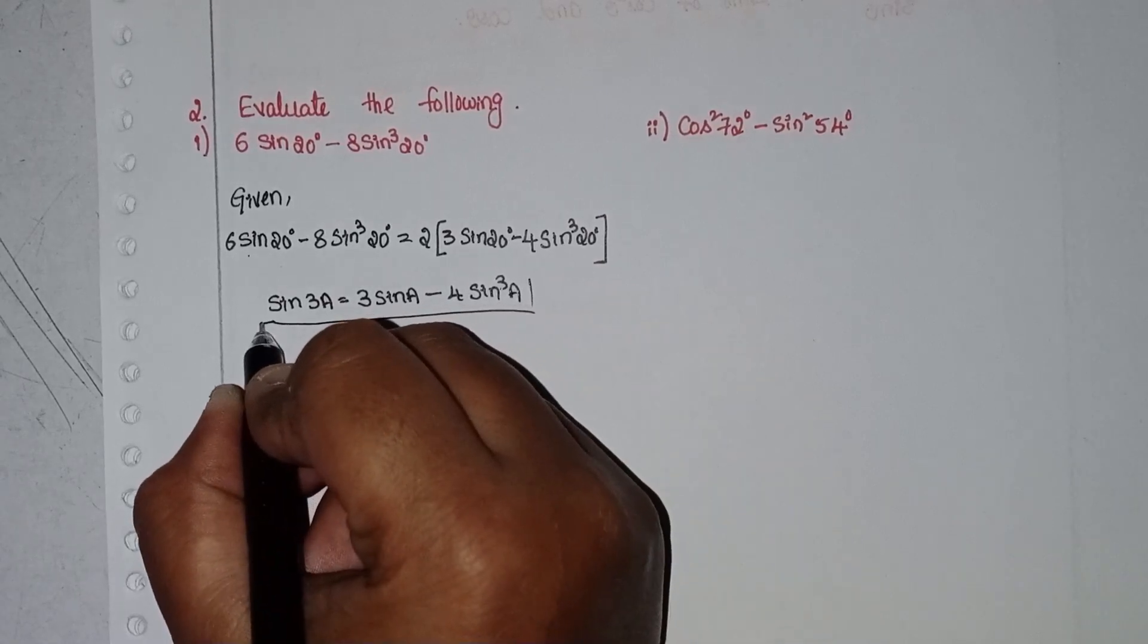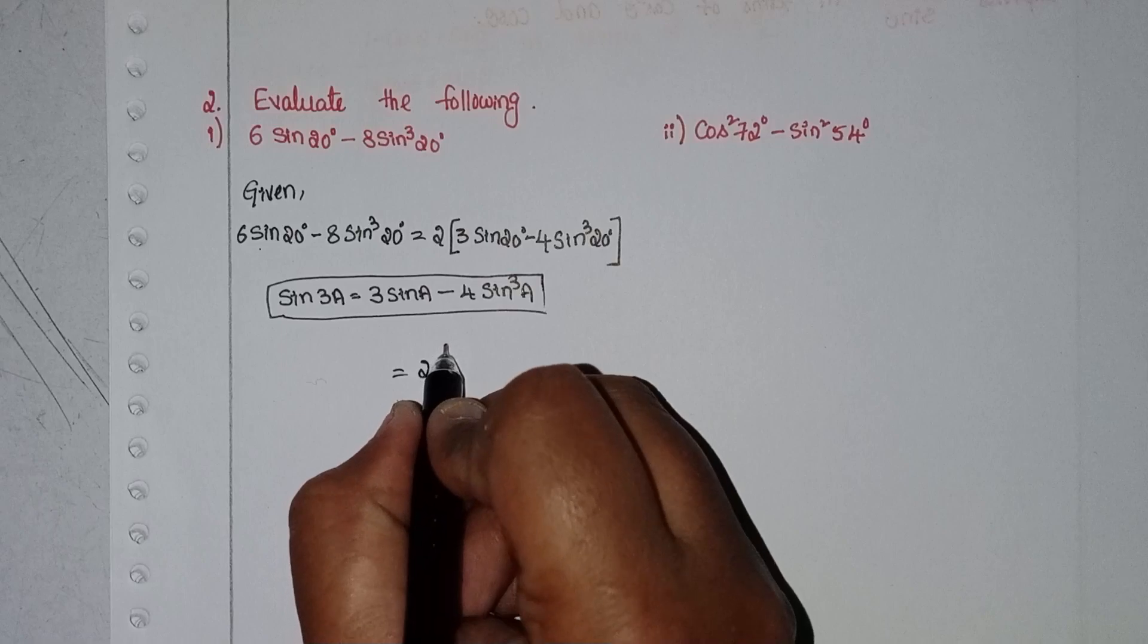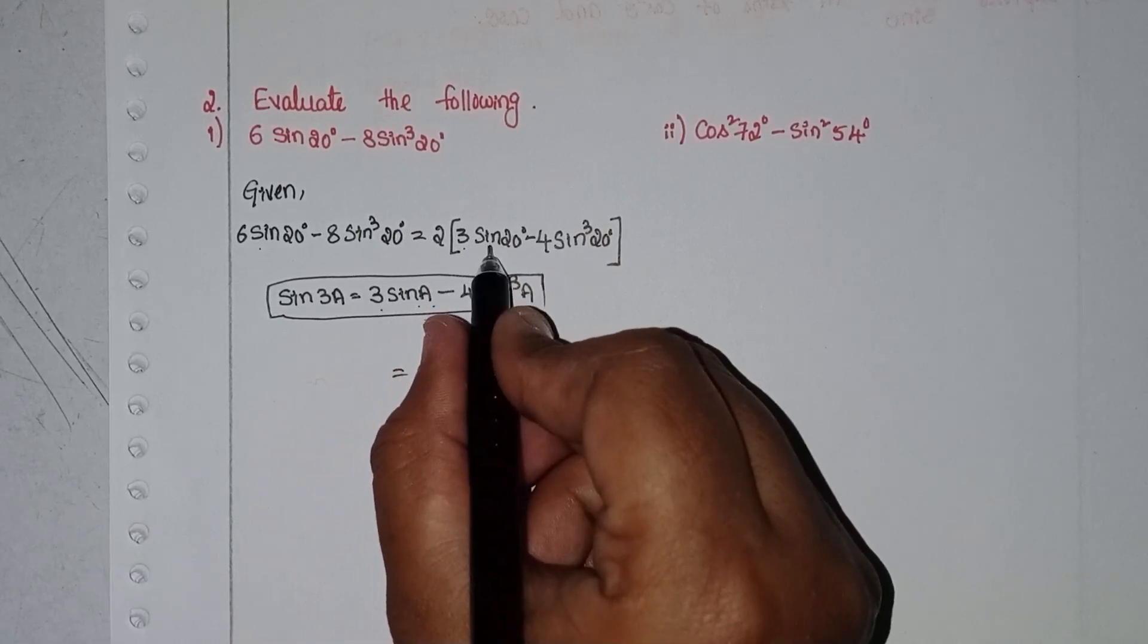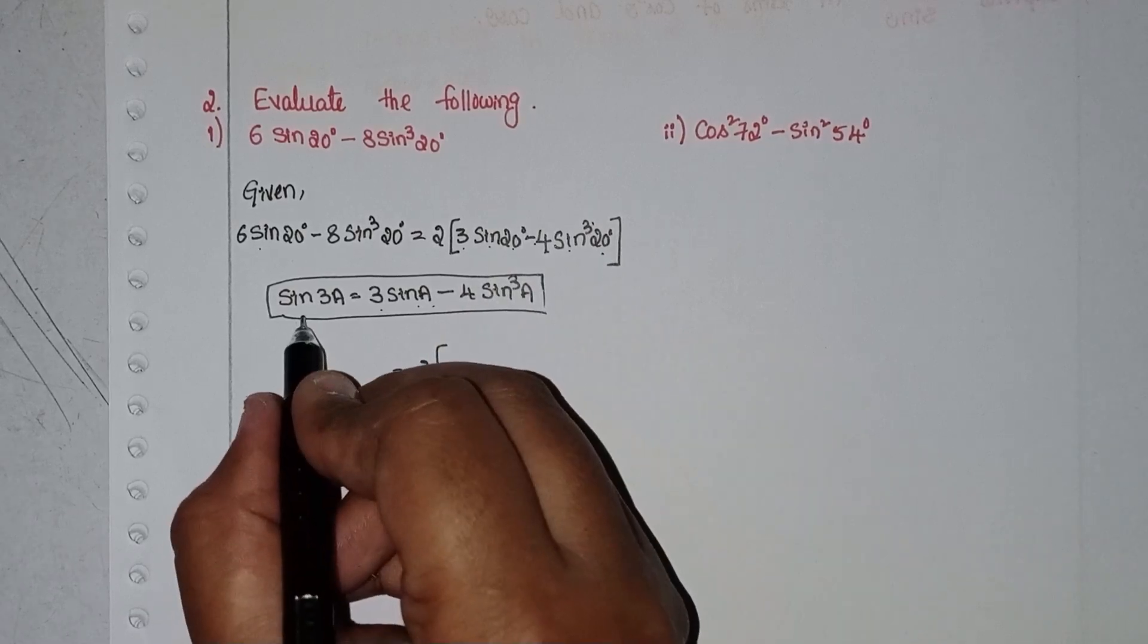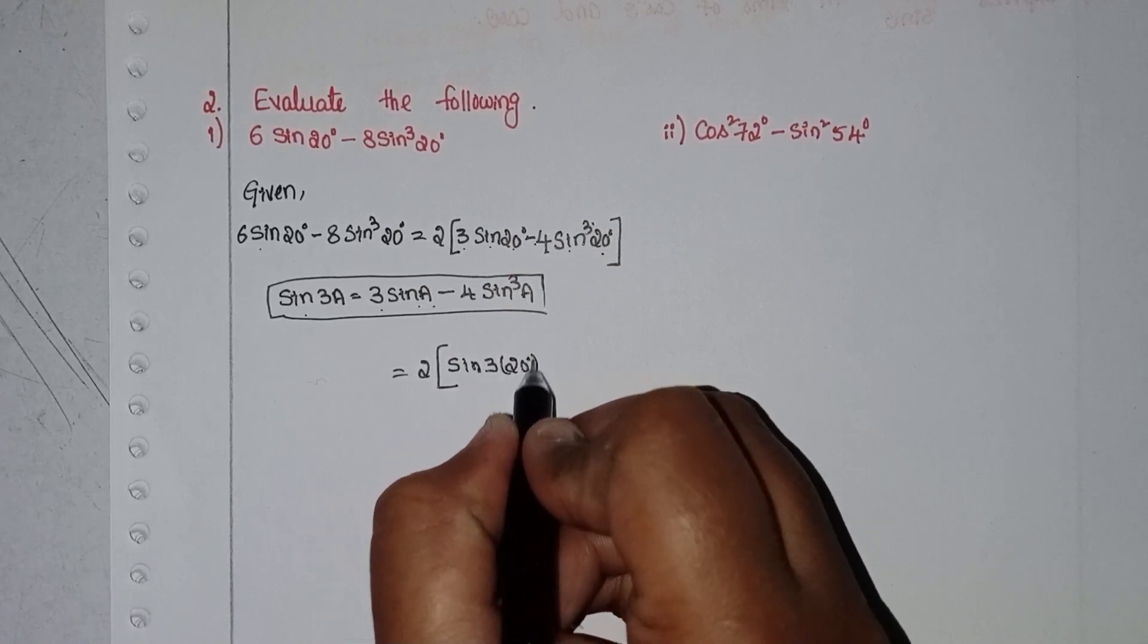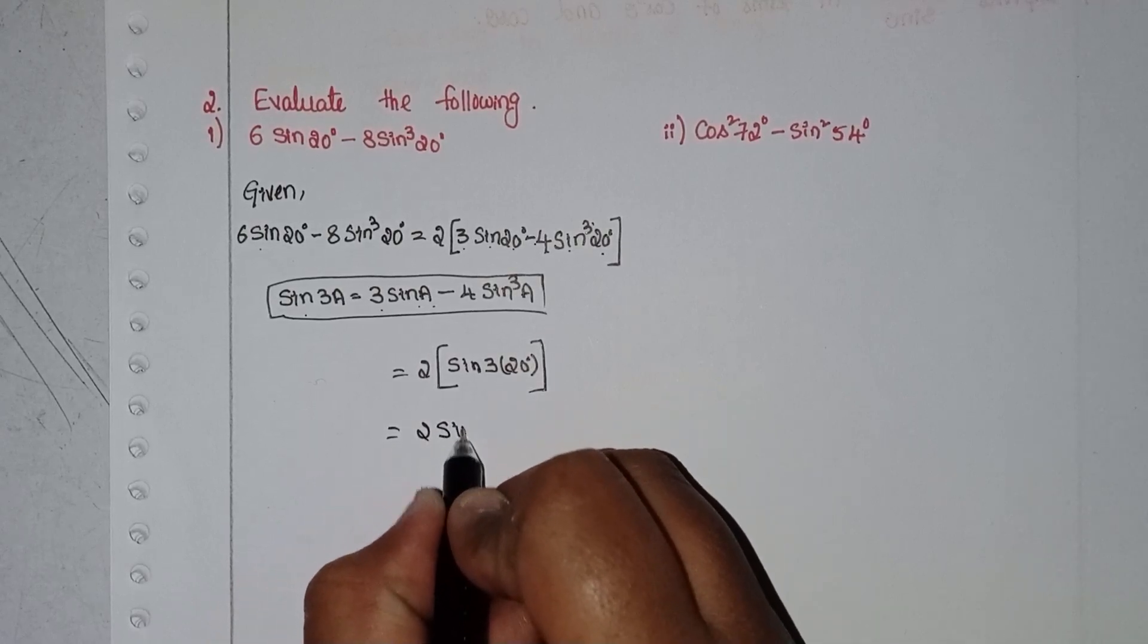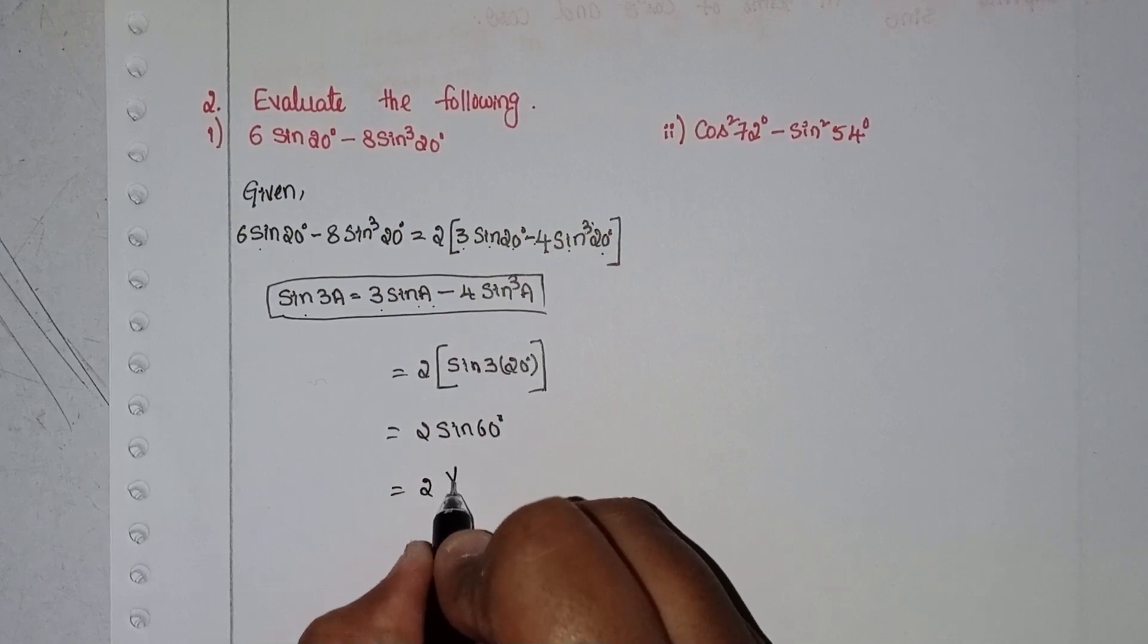Using the sine 3a formula to evaluate: 3 sin a - 4 sin³ a. Substituting a = 20°, we get sin 3a = sin 60°. So 2 sin 60° = 2 times root 3 by 2, which equals root 3. This is the first solution.